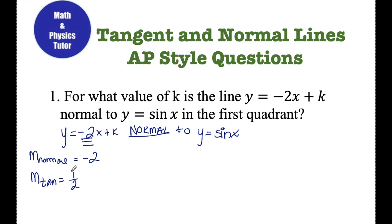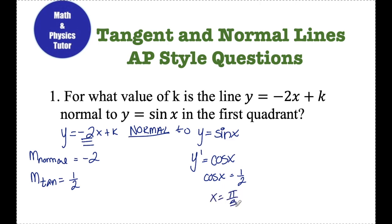If the slope of the tangent line is one half, I can find the derivative of sine x, which is cosine x. If I know that the slope of the tangent line is one half, I can set the derivative equal to one half to find the x value at which this tangent line and normal line intersect the curve y equals sine x. When I solve for x here, I get x equals pi over 3.